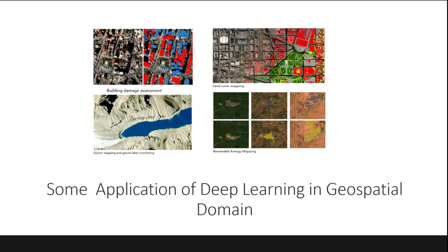These are some applications where deep learning can be used in the geospatial domain — automatic building damage assessment from satellite imagery, land cover mapping, glacier mapping, glacier lake monitoring, and renewable energy mapping. If you want to do these at scale, which is humanly not possible manually, deep learning comes to our rescue. All the things that can be done manually can be done automatically using deep learning.